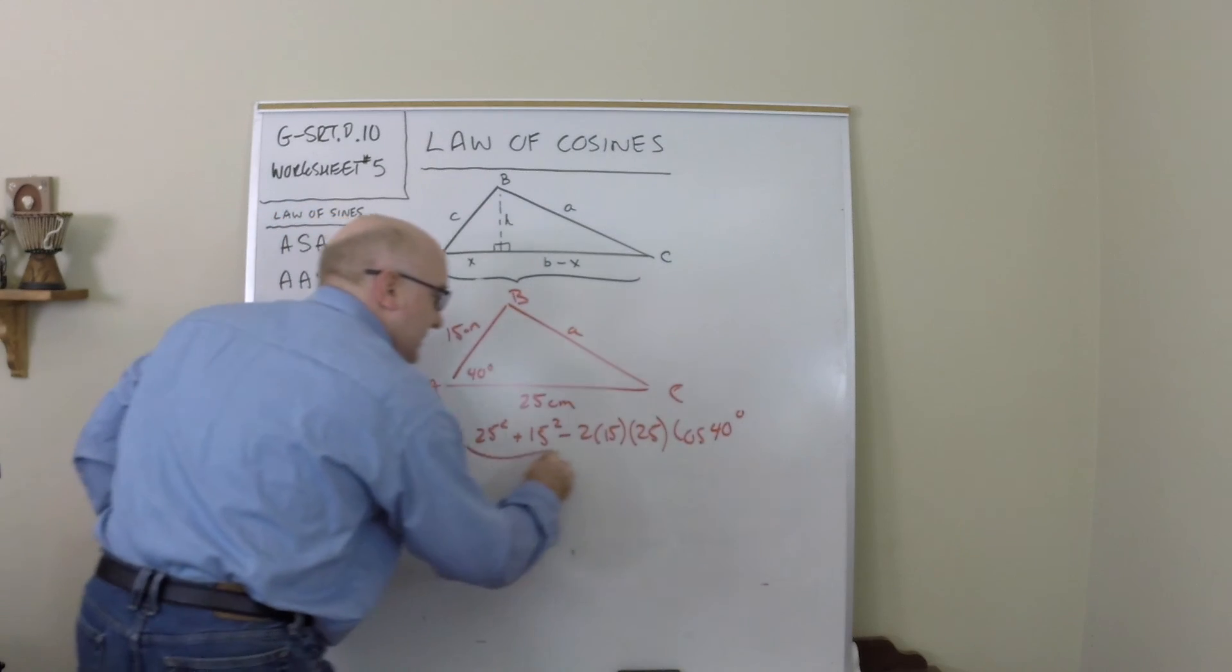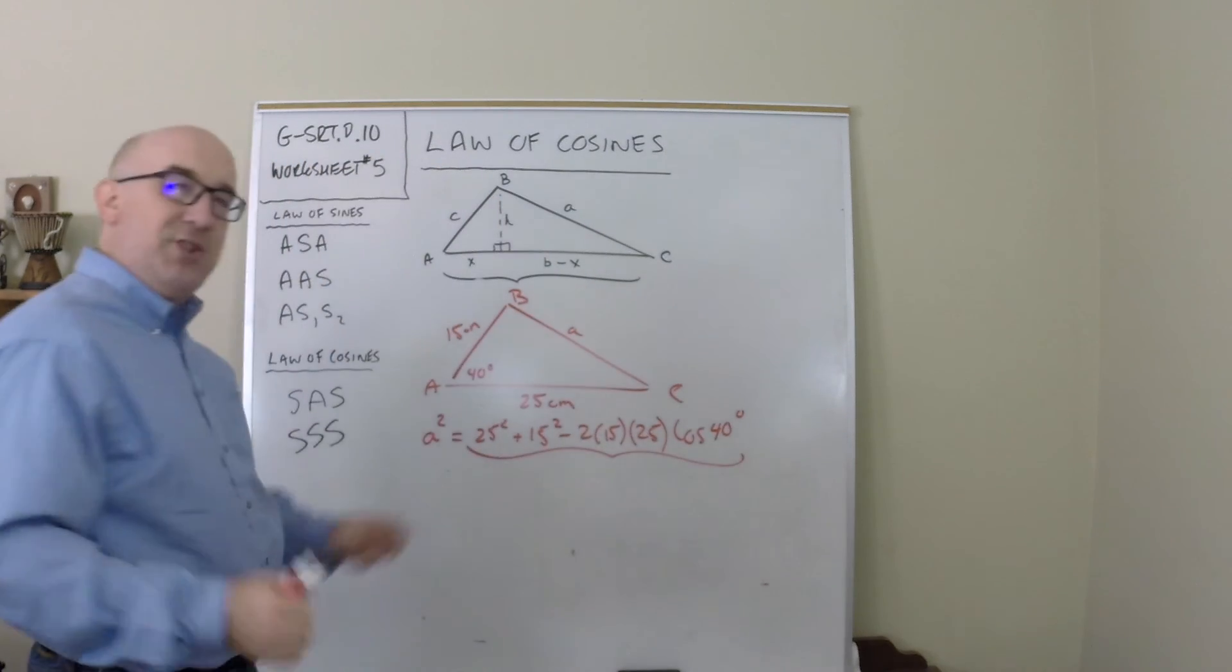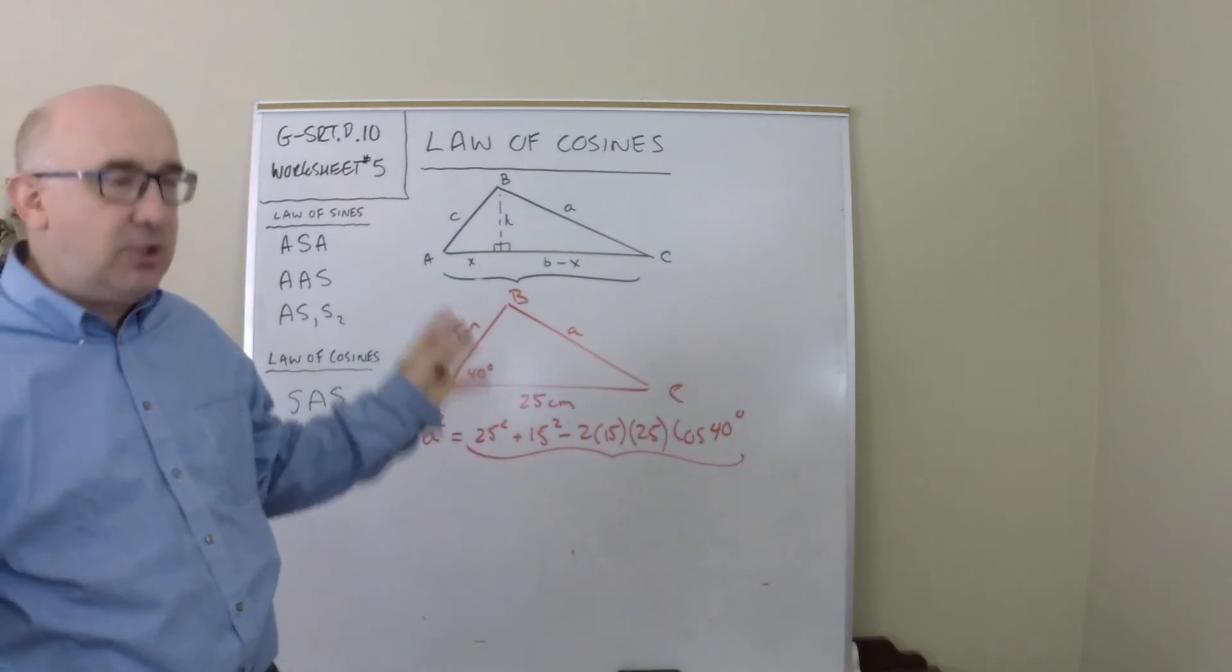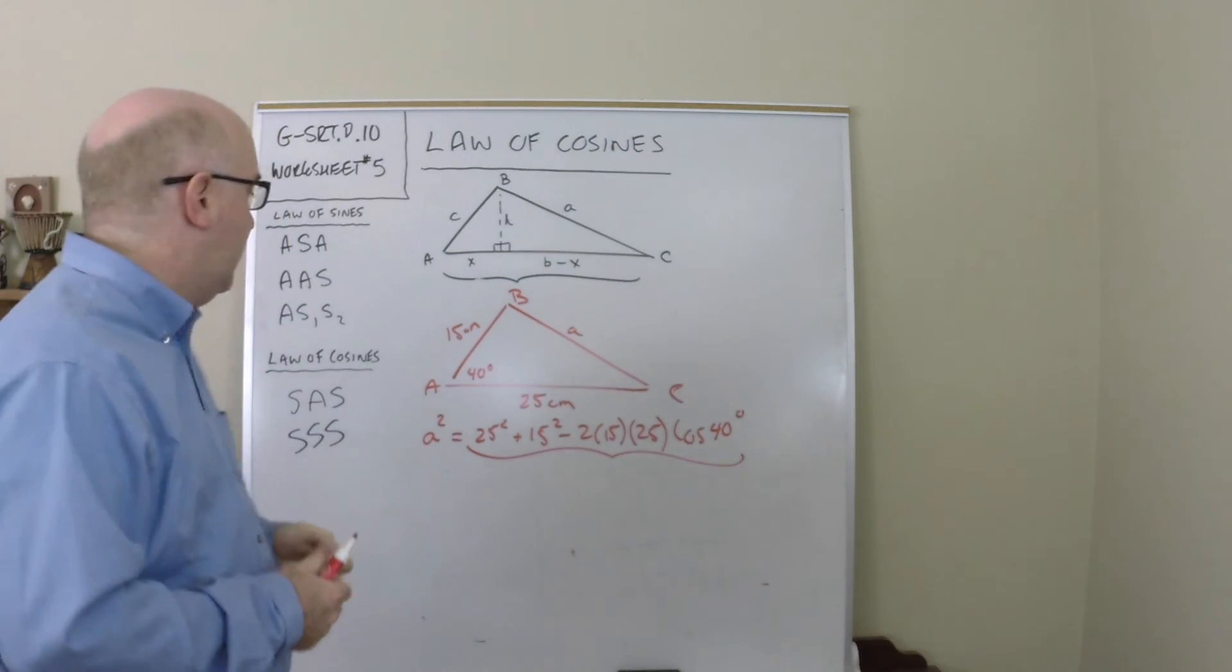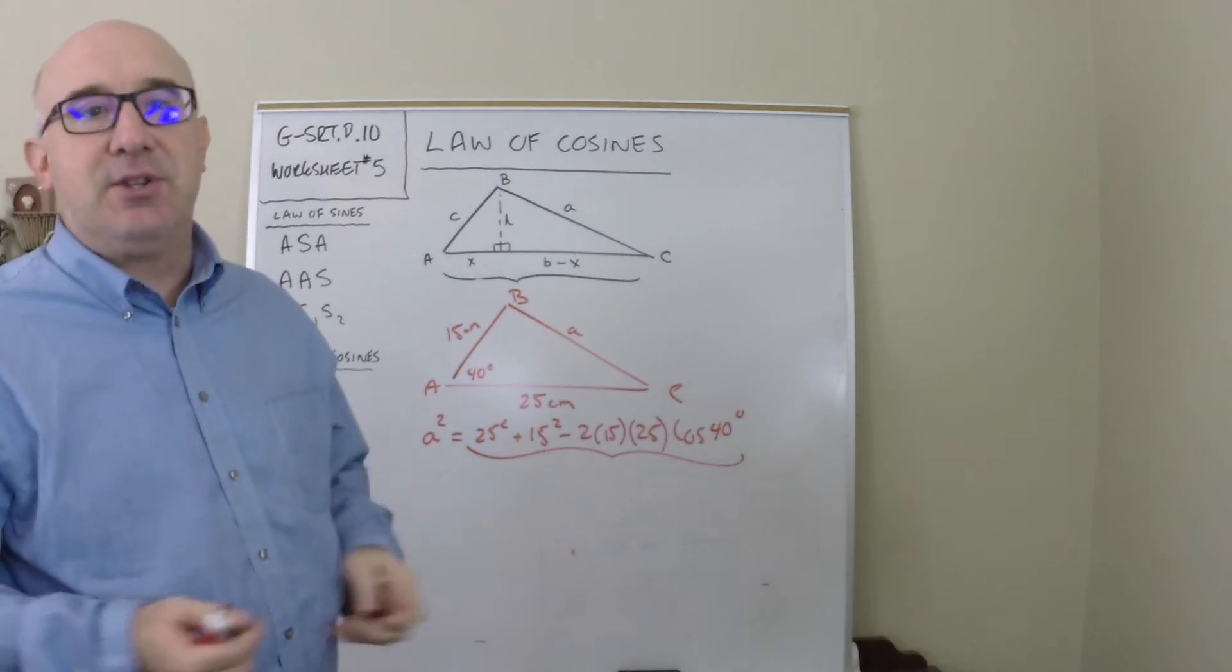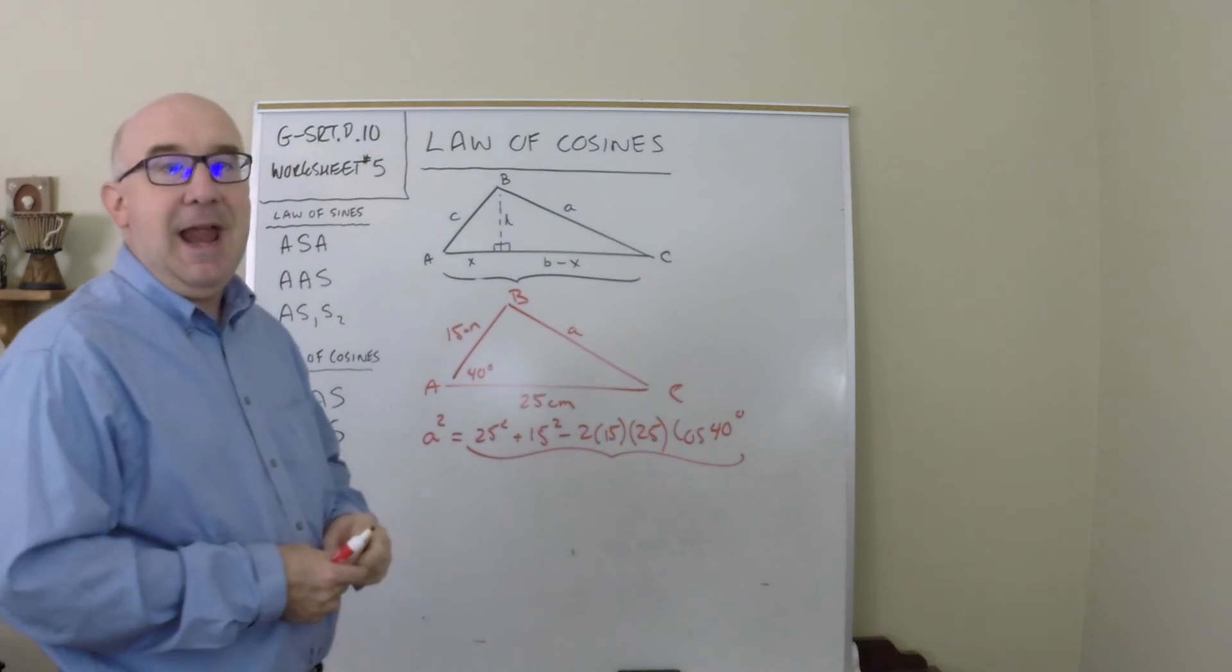Now this is ugly, but it's all one thing. You just crash that into a calculator, get a decimal, take the square root of that and you will obtain a.